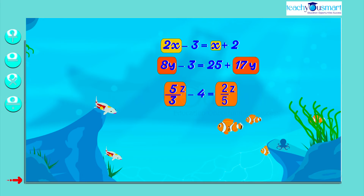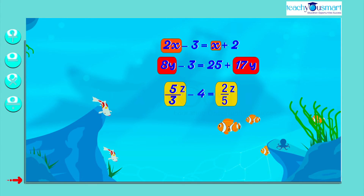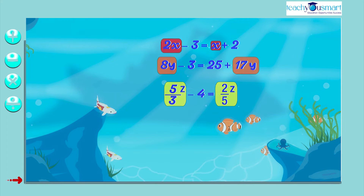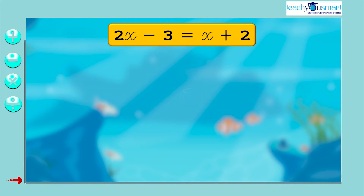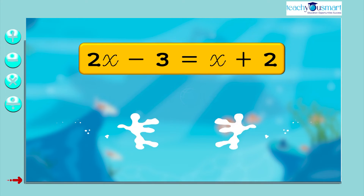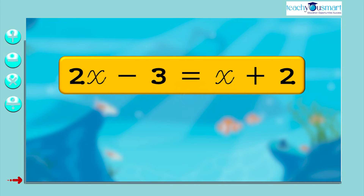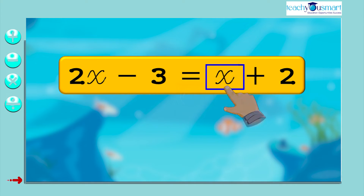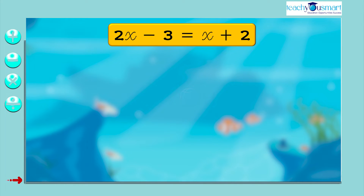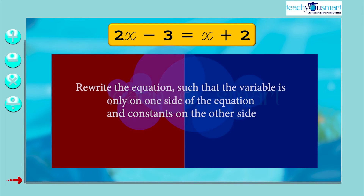Now we discuss how to solve these equations and find the value of the corresponding variable. Consider the equation 2x minus 3 equals x plus 2. Let's solve this equation by the inverse operation method. In this equation, the variable x is on both sides of the equality sign. We need to rewrite the equation such that the variable is only on one side and constants on the other side.